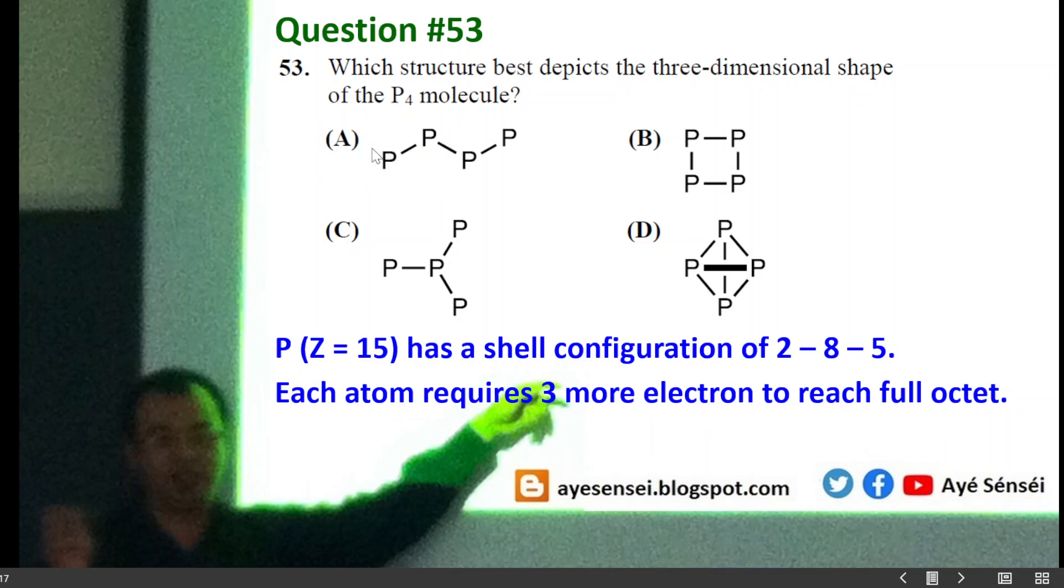So by judging from option A, it means that each atom can only get two more electrons. And then B also the same - two more electrons. And then for C, the central atom can actually get three extra electrons, but the problem is the other phosphorus atoms cannot get the same thing. So the only possible structure is D.